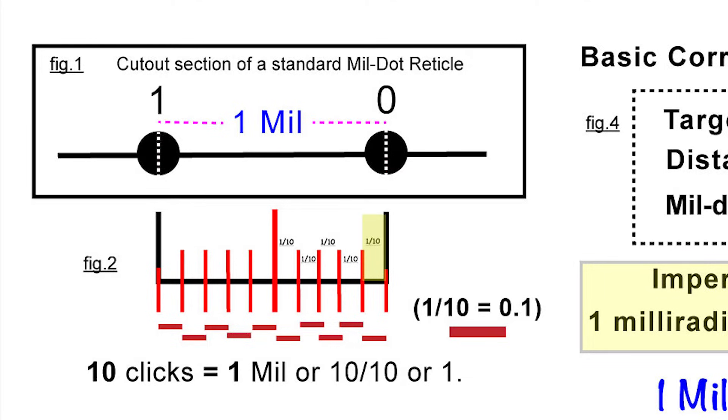That's the middle of the dot, and that distance from the middle of dot zero to the middle of dot one is one mil. Now there is a figure or a graph down below, figure two, and this is helping to explain the click.